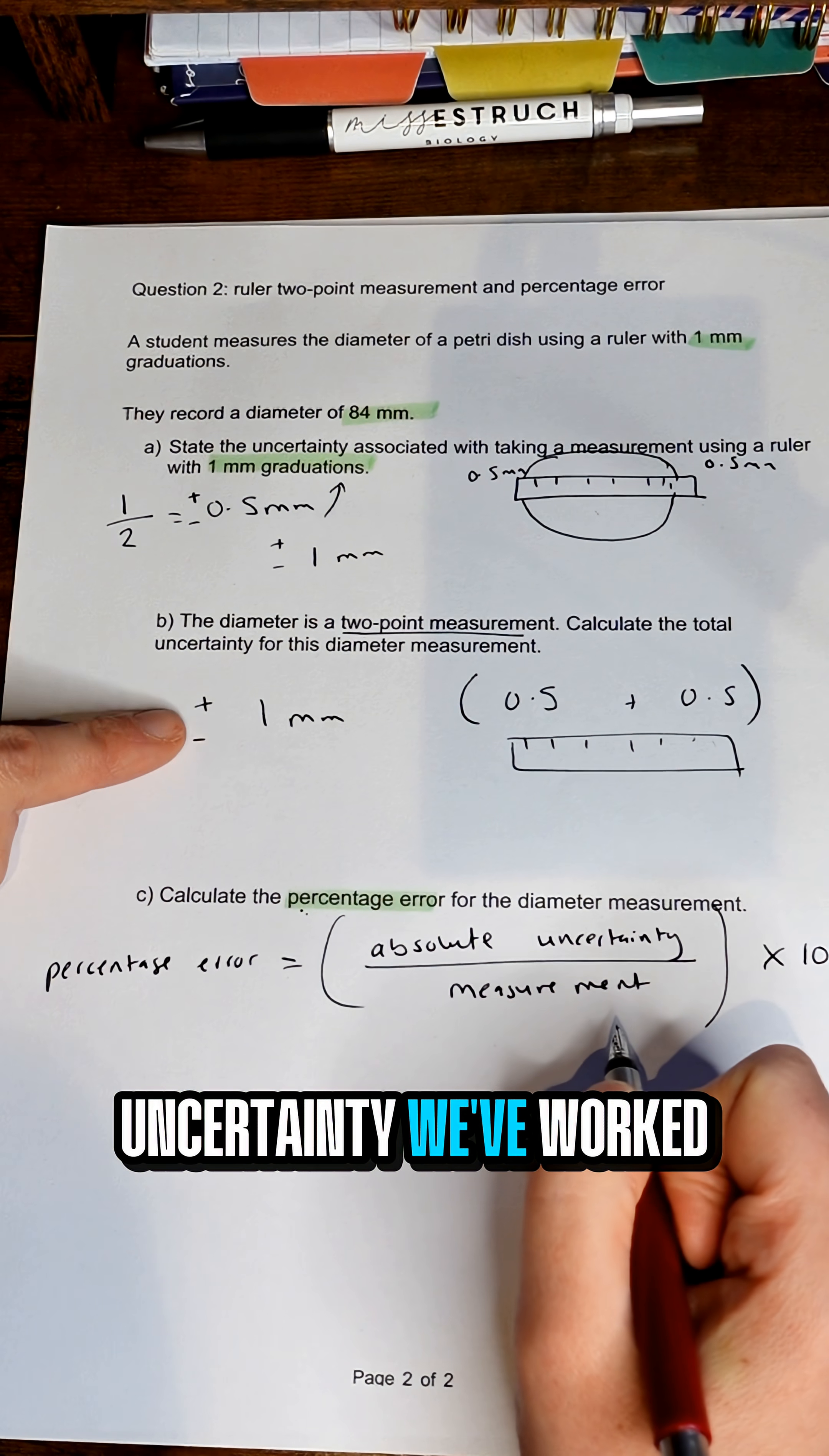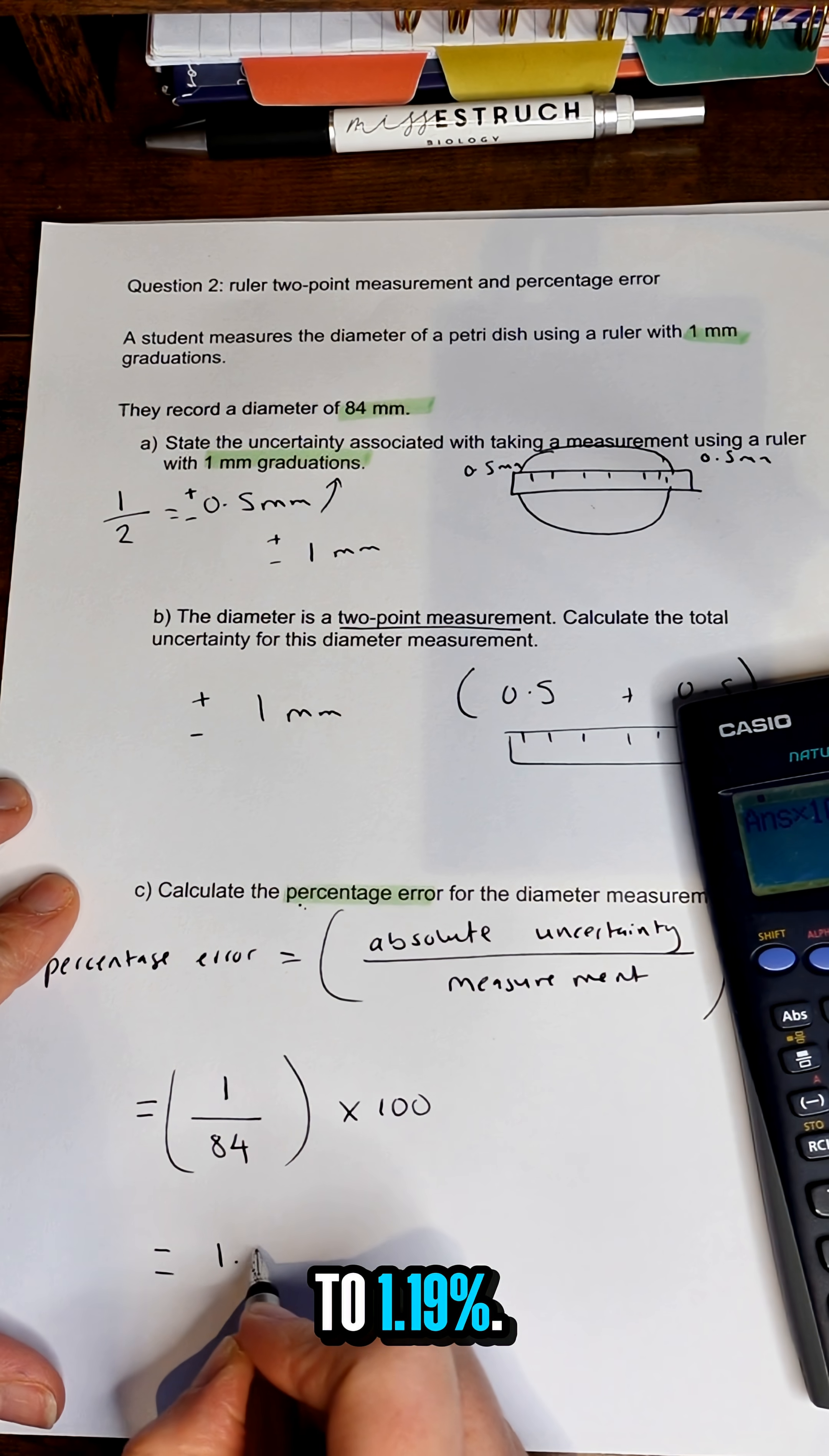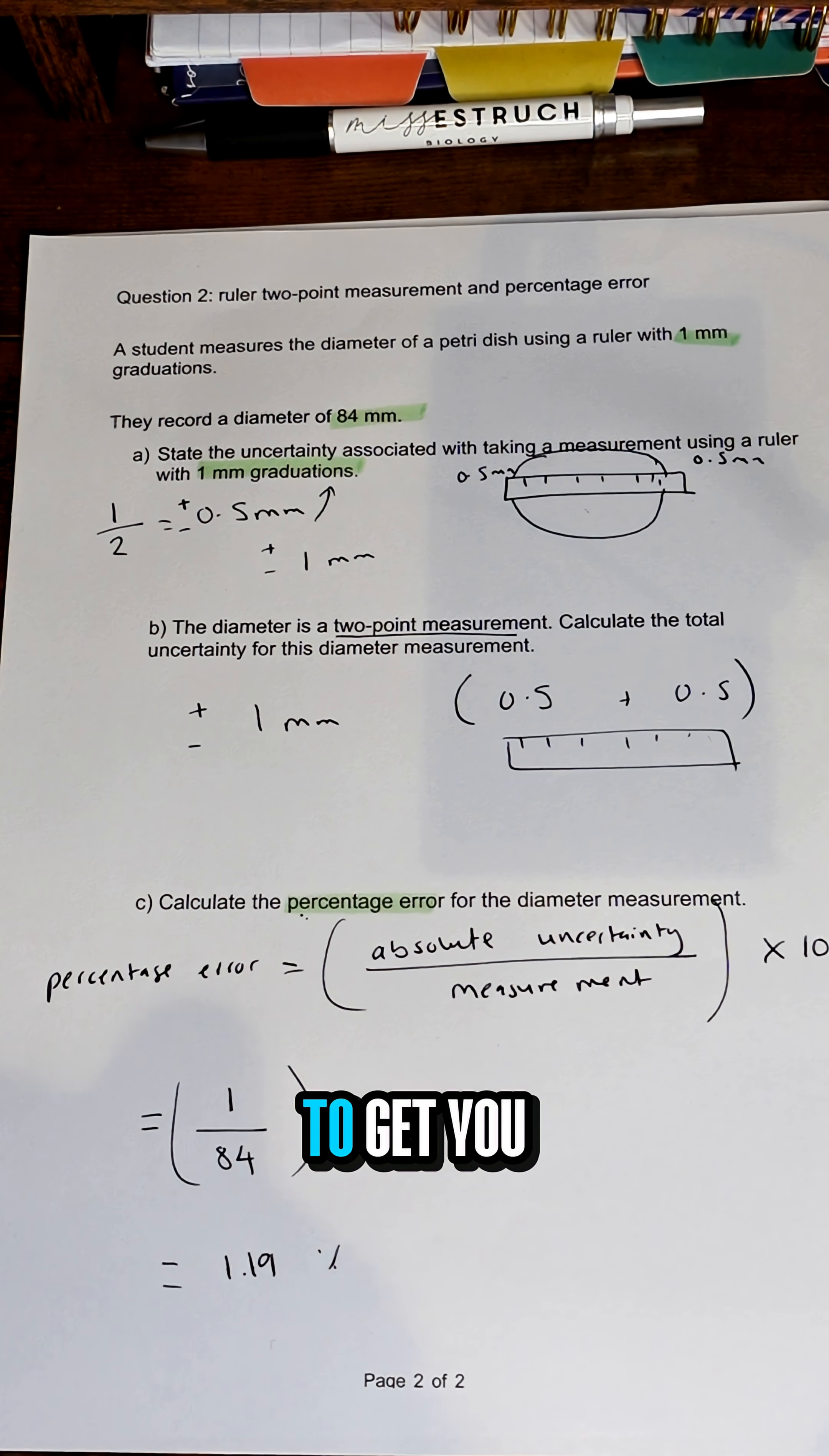Our absolute uncertainty we've worked out is 1. Our measurement is 84. So 1 divided by 84 times 100 and that comes to 1.19%. Save this so you can revise this math skill before your A-level exam to get you more marks.